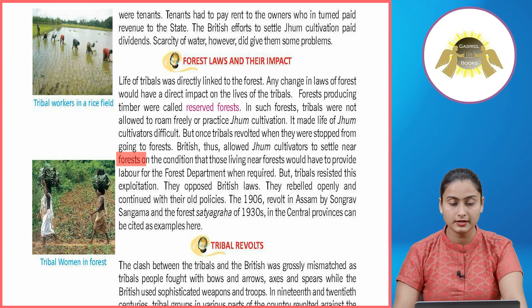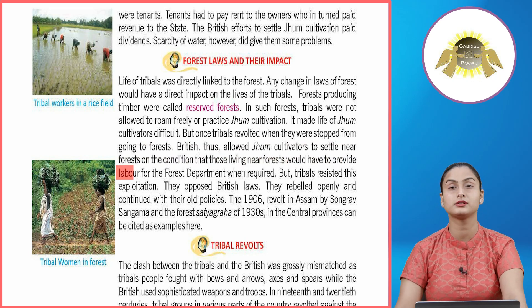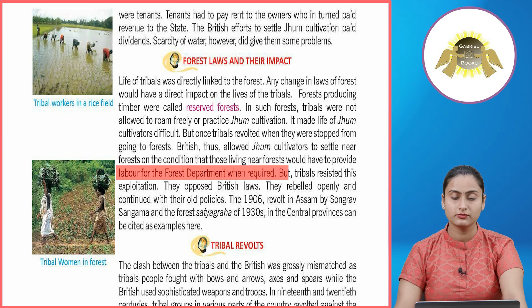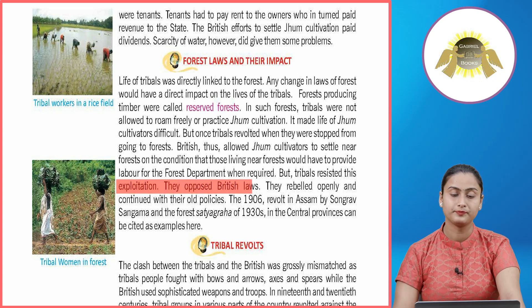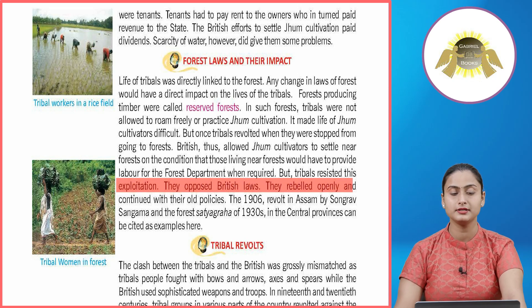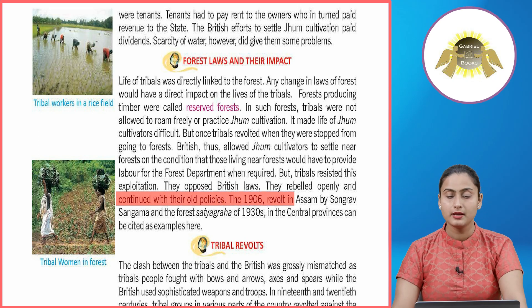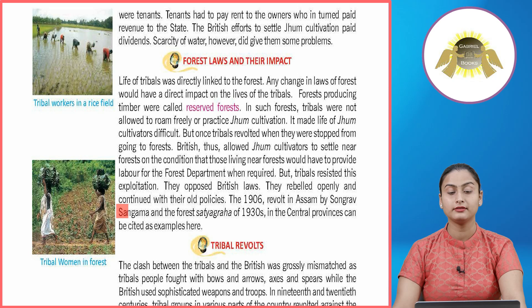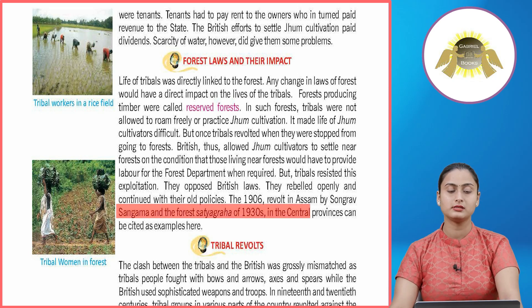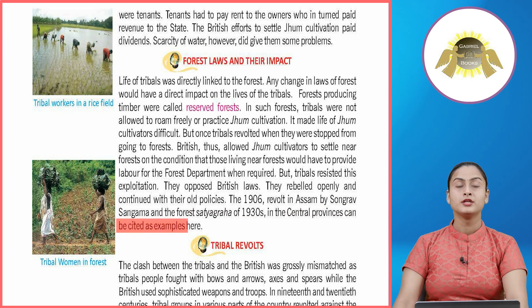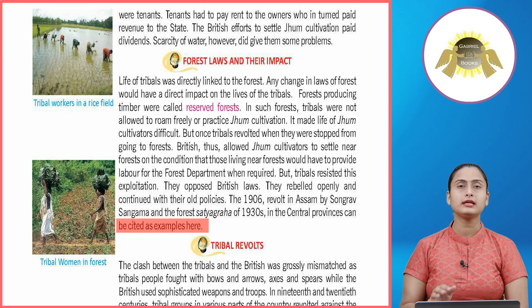The British then allowed jhoom cultivators to settle near forests, on the condition that those living near forests would provide labor for the forest department when required. However, tribals resisted this exploitation — they opposed British laws, rebelled openly, and continued with their old practices. The 1906 revolt in Assam by the Songrav Sangama and the forest satyagraha of the 1930s in the central provinces can be cited as examples.